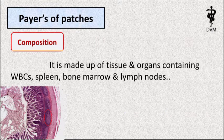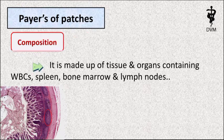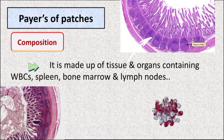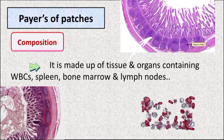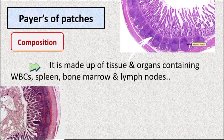Composition of Peyer's Patches: These are made up of tissues and organs containing white blood cells, spleen, bone marrow, and lymph nodes.